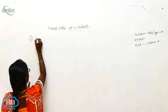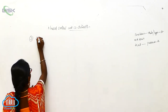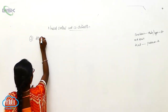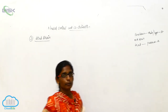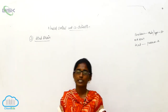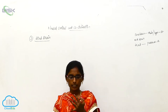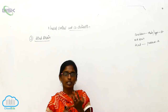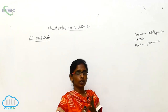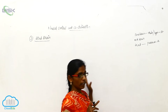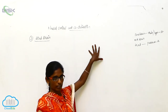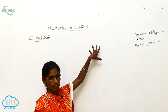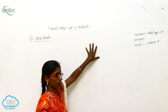The third part is the Hindbrain. The hindbrain divides into three parts: the Cerebellum, Pons Varoli, and Medulla Oblongata. Now let us see about the Cerebellum.